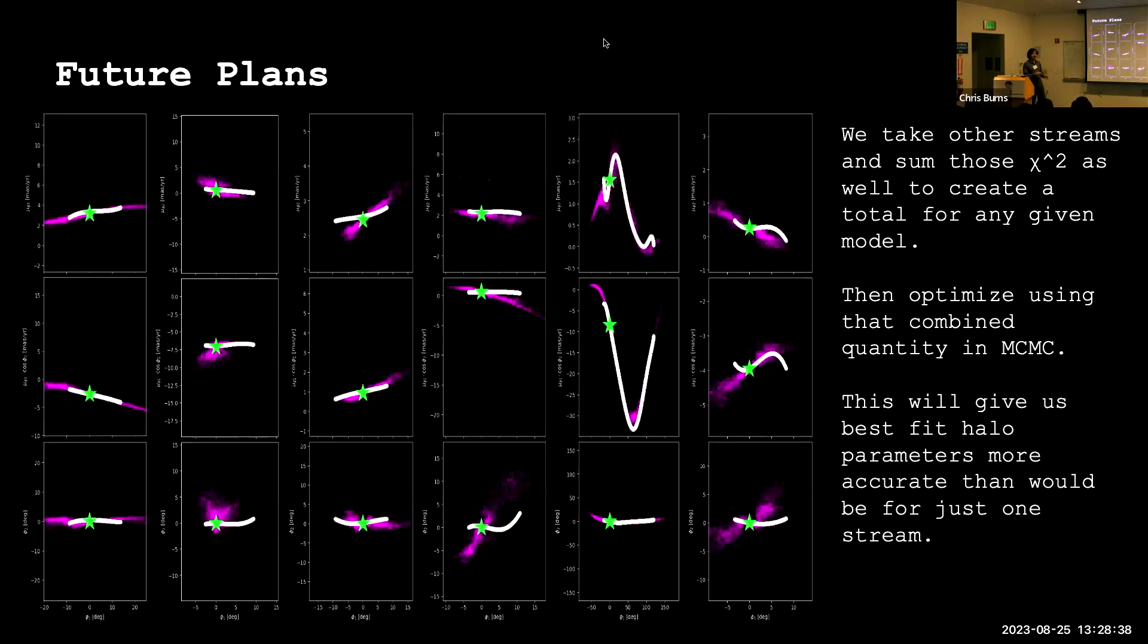So in the future, what we plan to do is this: so far you just saw this stream, NGC 7089. We plan to do this for all six of the streams that we have looked at at the same time. So you sum the chi-squared for each of these streams and each of their coordinates all at the same time, and then minimize that chi-squared quantity—minimize these significant differences—in order to obtain the best fit parameters.